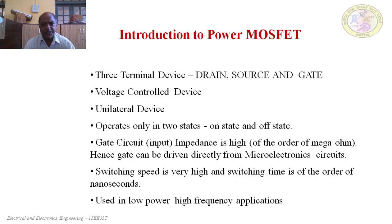MOSFETs have three terminals — that is, a drain, source, and a gate. The function of the source terminal is to supply the carriers into the channel, whether holes or electrons, depending upon the type of MOSFET. The drain terminal collects whatever carriers come through the channel — it is referred to as the drain terminal. The gate terminal's function is to control the flow of charges or carriers through the channel.